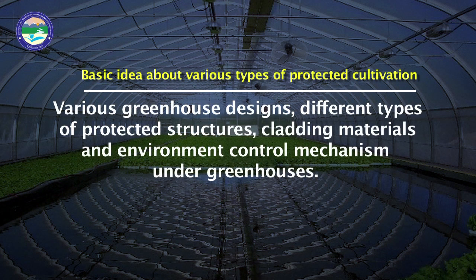After completing this course, the learner shall be able to understand basic ideas about various types of protective cultivation, various greenhouse designs, different types of protective structures, cladding materials and environment control mechanisms under greenhouse. The learner will be acquainted with nursery and crop raising techniques under controlled environment, and will understand advanced irrigation and fertigation techniques. The know-how of soil-less culture will also be delivered, and learners will be able to start their own enterprise related to protective cultivation or provide technical help to other beginners.